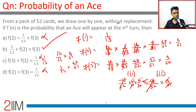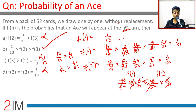To clarify the problem: we draw one by one without replacement, and f(n) means the ace will appear for the very first time at the nth turn — it has not appeared before. That's the key assumption to keep in mind.